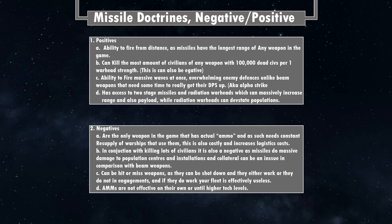Positive D: access to two-stage missiles and radiation warheads, which can massively increase range and payload. Radiation warheads can devastate populations — causing massive radiation poisoning and radiating an entire world. Also worth noting that missile doctrine gives you access to mines and buoys, which is another thing to consider.